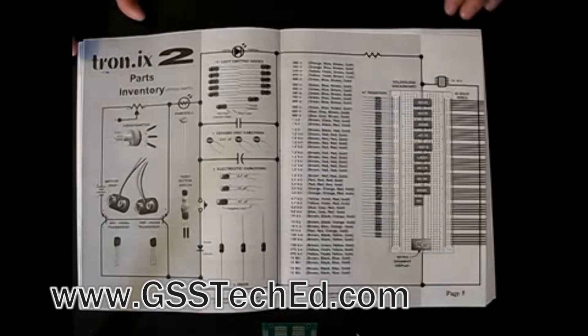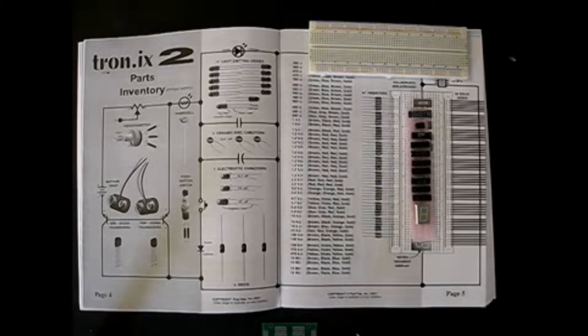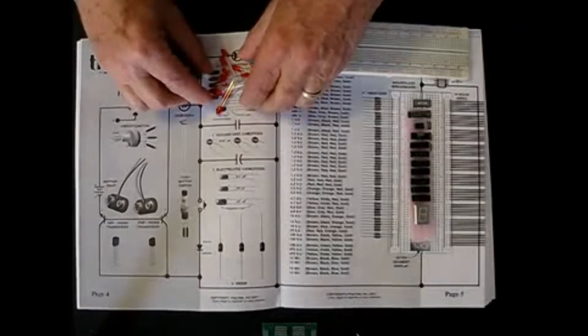As you turn the page, you come to the inventory. We supply all of these parts. These are all included in the lab. You have a solderless breadboard. We give you all the integrated circuits, including the seven-segment readout. You get 12 bright red LEDs for doing all of the experiments.